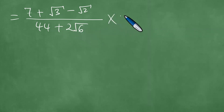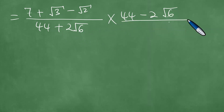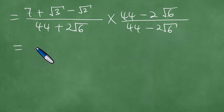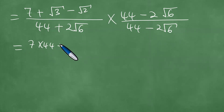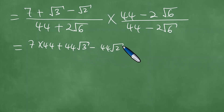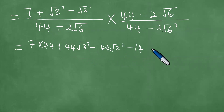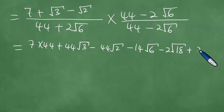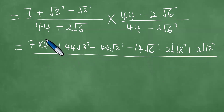So we have 7 plus the square root of 3 minus the square root of 2, divided by 44 plus 2 times the square root of 6. Multiply by 44 minus 2 times the square root of 6, divided by 44 minus 2 times the square root of 6. Now we multiply through: 44 times 7 is 308, plus 44 times the square root of 3, minus 44 times the square root of 2. In the denominator, we have difference of two squares, so we'll have 44 squared minus 4 times 6.